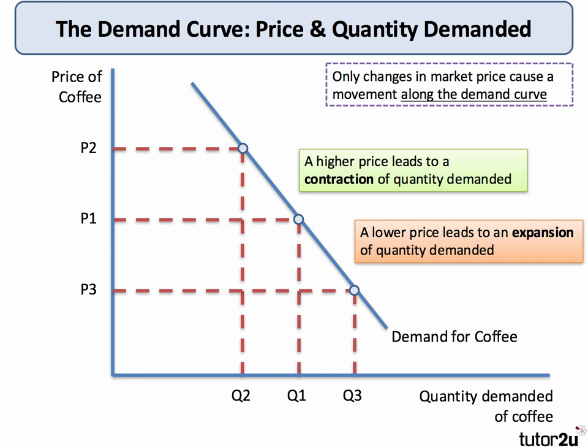So here is our basic demand curve. In this case, it's the demand for coffee relative to the price. Price on the y-axis, quantity demanded for coffee on the x-axis. The price goes up, we see a contraction of demand. The price goes down, we see an expansion of demand. The key revision point is that only changes in market price cause a movement along the demand curve.